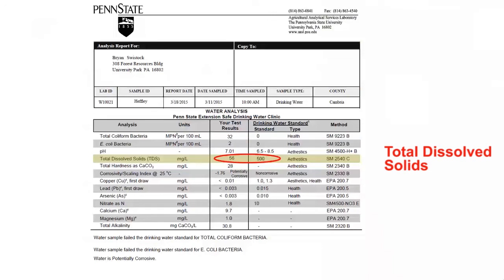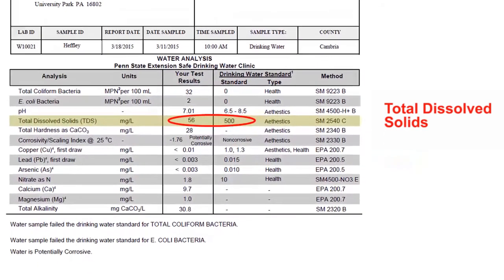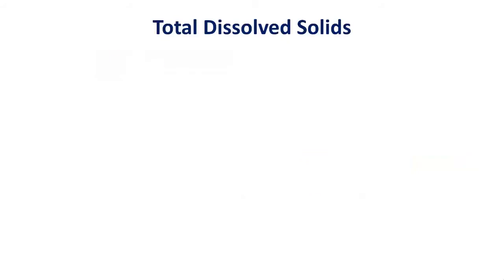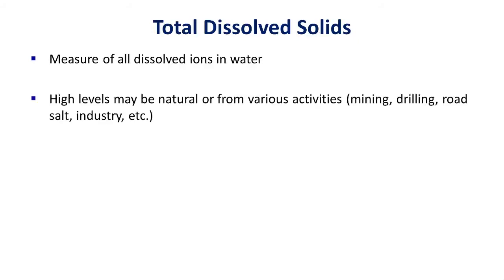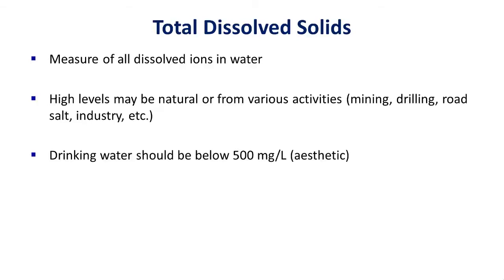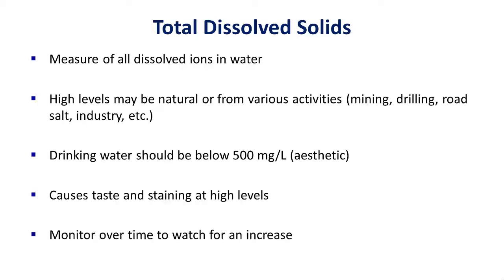Total dissolved solids, or TDS, is another common test included in most test packages. In this case, the TDS level of 56 milligrams per liter is well below the aesthetic drinking water standard of 500 milligrams per liter, so it easily passes the test. Total dissolved solids is a measure of all the dissolved ions in your water including nitrate, hardness, lead, arsenic, and many other pollutants. High levels of TDS can be natural from certain types of rock or can be from various polluting activities. The aesthetic drinking water standard of 500 milligrams per liter was set because this amount of TDS or higher can cause bad taste or staining. TDS is an inexpensive and easy water test that should be monitored over time to make sure nothing is being added to your water from nearby activities.